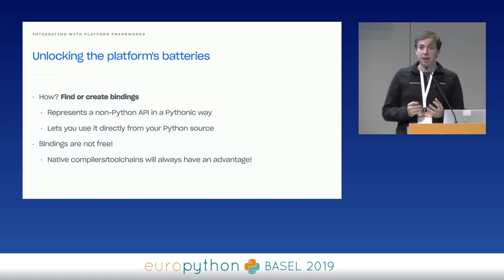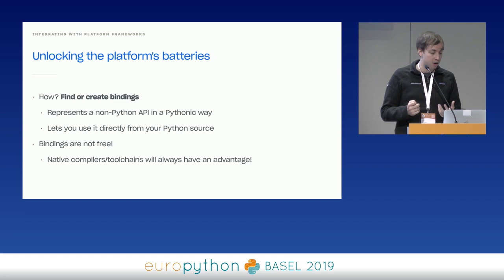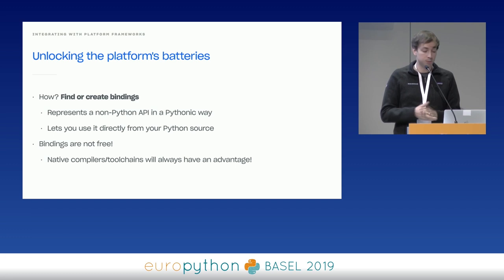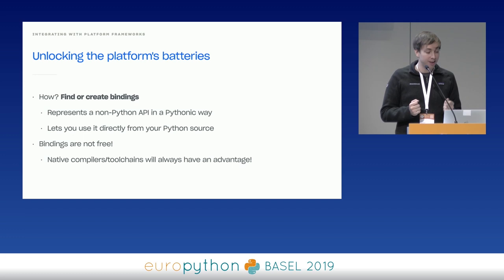So how should we go about using those APIs? Most platforms, sadly, don't directly support Python as a first-class language. To use those APIs, you're going to need bindings — ways of projecting non-Python APIs into Python. These are great because they let you use those APIs from Python as though Python were a first-class supported language. But bindings aren't free — that's our first lesson. Bindings are actually relatively costly if you're not careful. Also, the native compilers and toolchains will always have a little bit of an advantage, no matter how much glue you introduce.